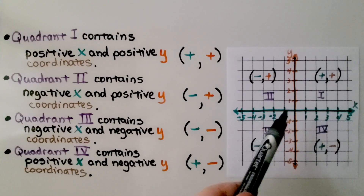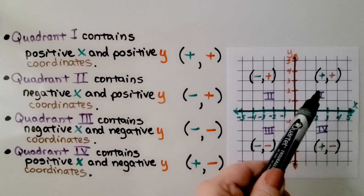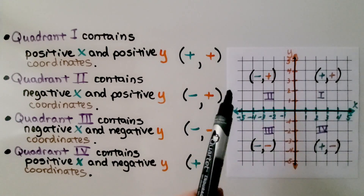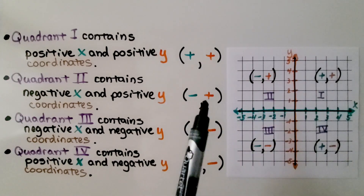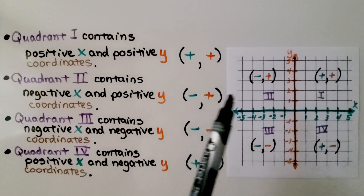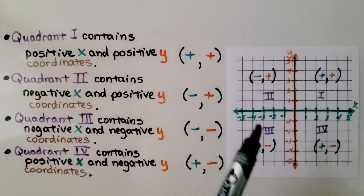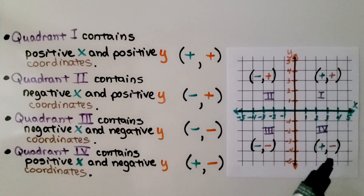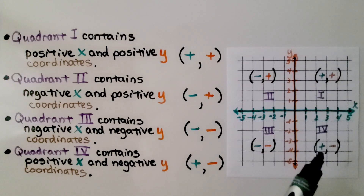Quadrant one contains positive x and positive y coordinates — it's positive, positive. Quadrant two contains negative x and positive y coordinates. Quadrant three contains negative x and negative y coordinates. And quadrant four contains positive x and negative y coordinates.